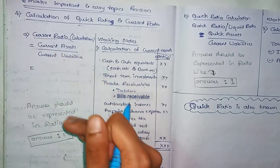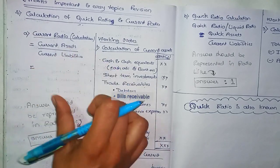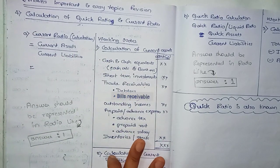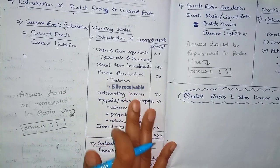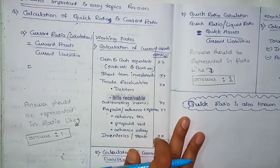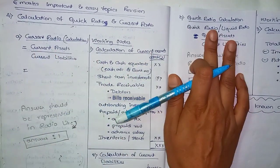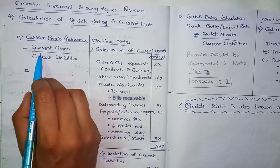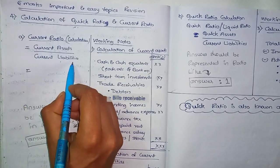So here are two different ratios — one current ratio and one quick ratio. The current ratio formula is current assets divided by current liabilities.